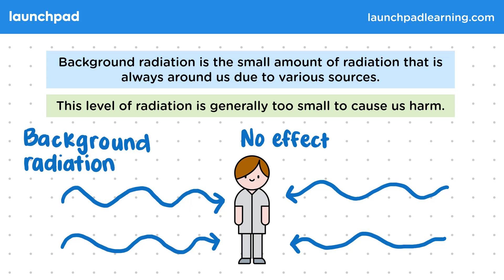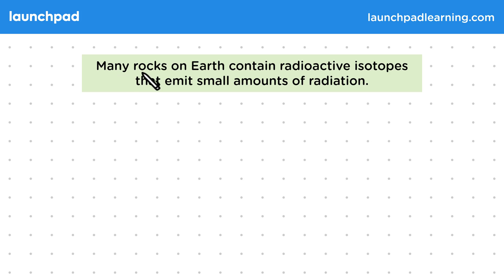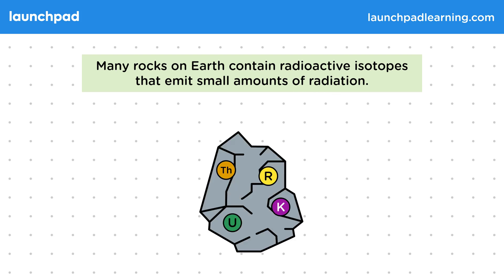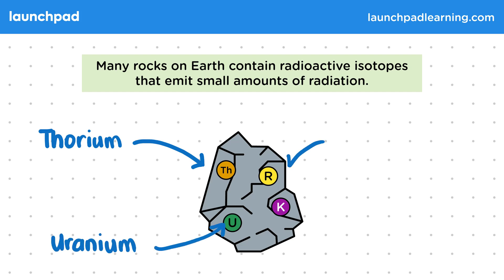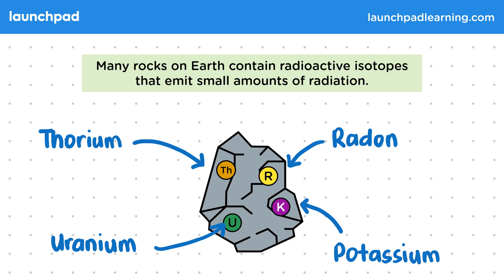So where can we find background radiation? Many rocks on Earth contain radioactive isotopes that emit small amounts of radiation. Some examples of these radioactive isotopes include thorium, uranium, radon, and also potassium. These isotopes contribute to background radiation as radiation is released by the rocks.